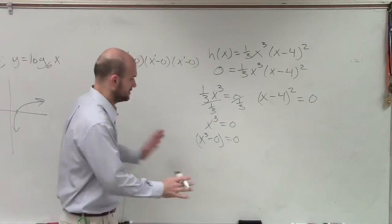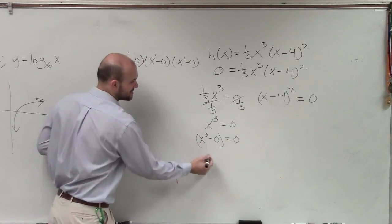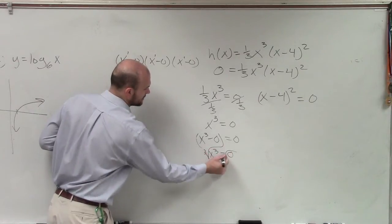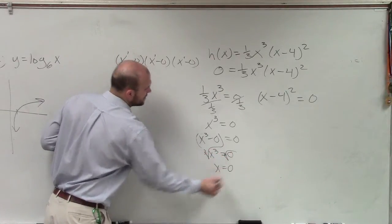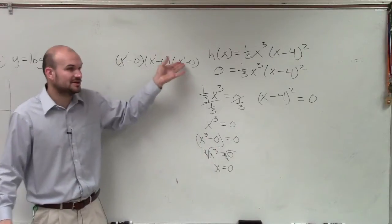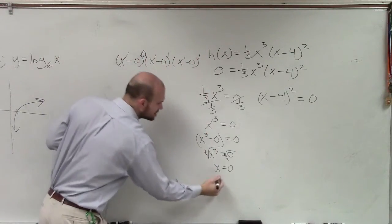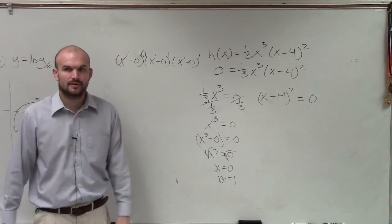What is the exponent on each one of those linear factors? 1, right? So when you guys look at this, when I solve this as it's x³ equals 0, I take the cube root of both sides. I get x equals 0. Since on my linear factors, the exponent is 1, the multiplicity is equal to 1.